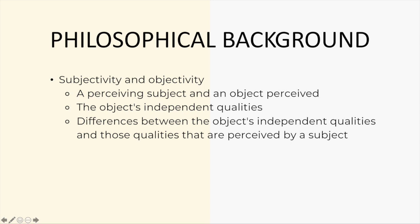Subjectivity often refers to something that is connected to a perceiving subject, the consciousness of a perceiving subject. Whereas objectivity is when we're referring to objects that are perceived. When we are framing things in terms of objectivity, we are really considering the object's independent qualities. There are differences between the object's independent qualities and those qualities that are perceived by a subject.